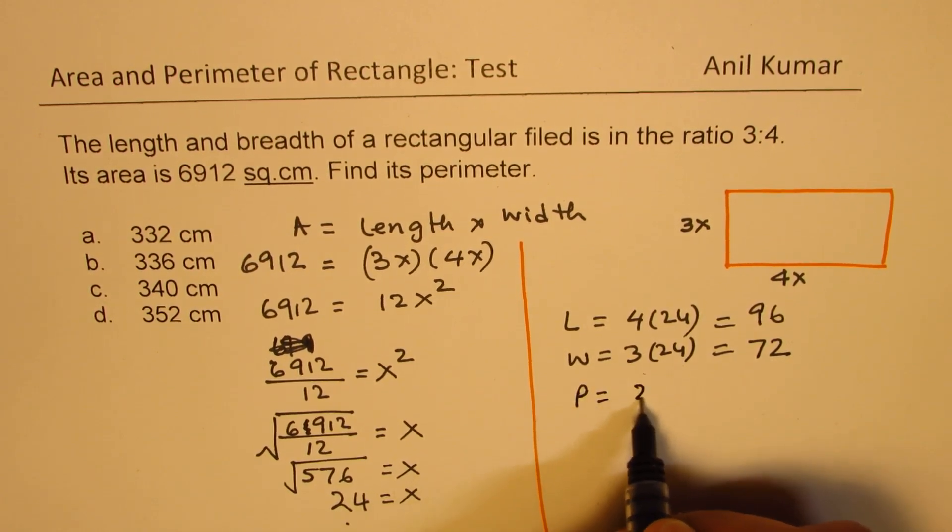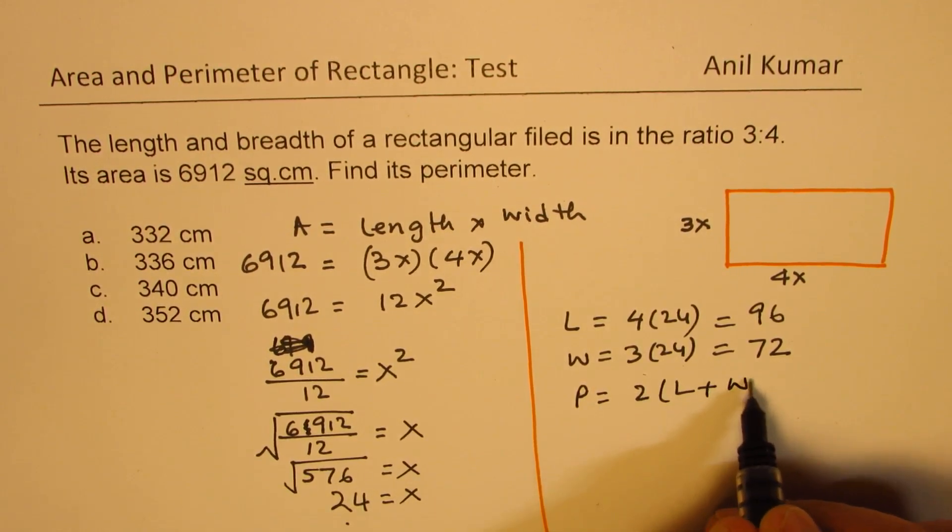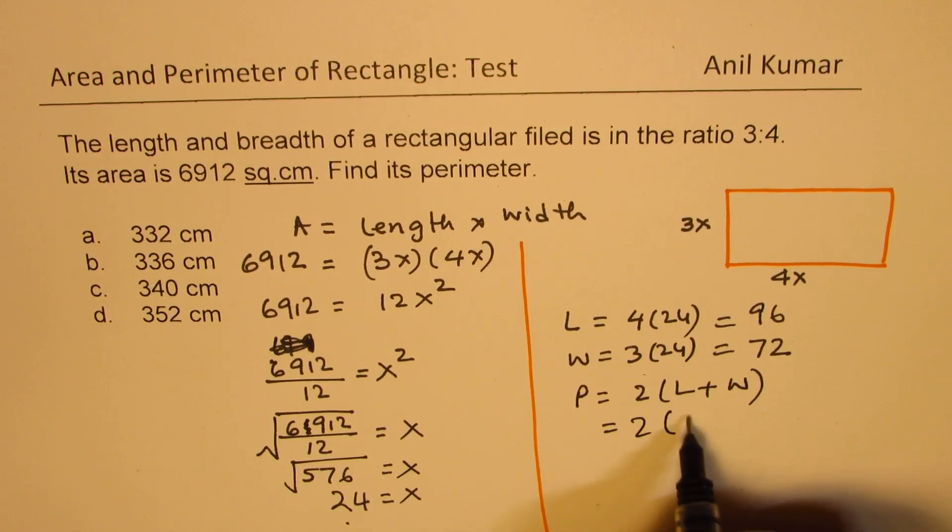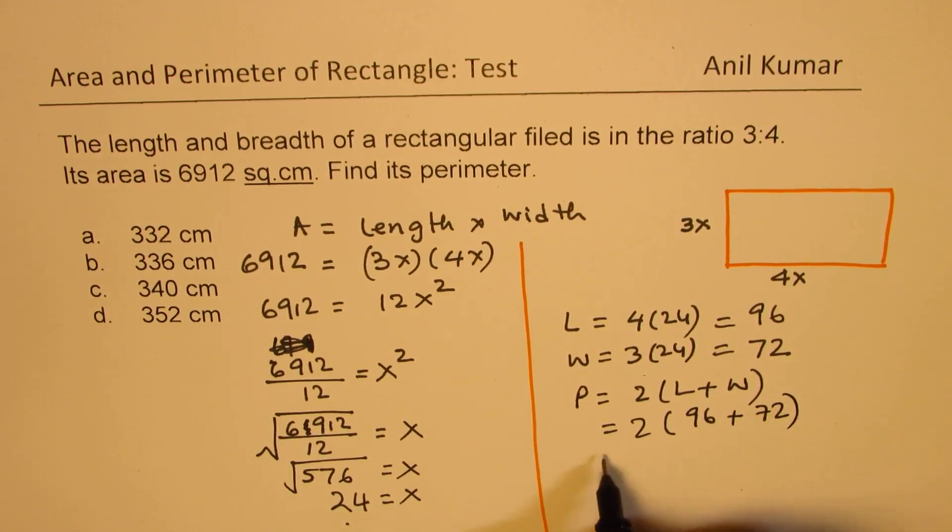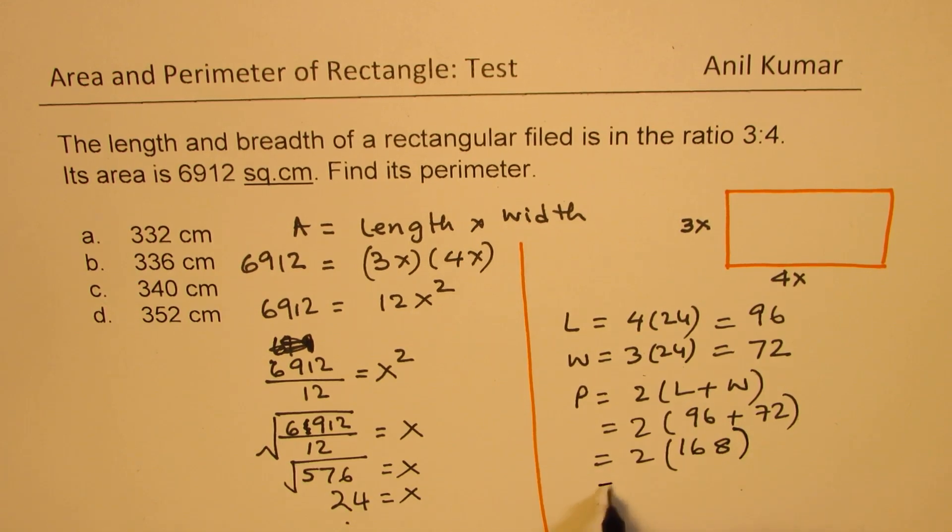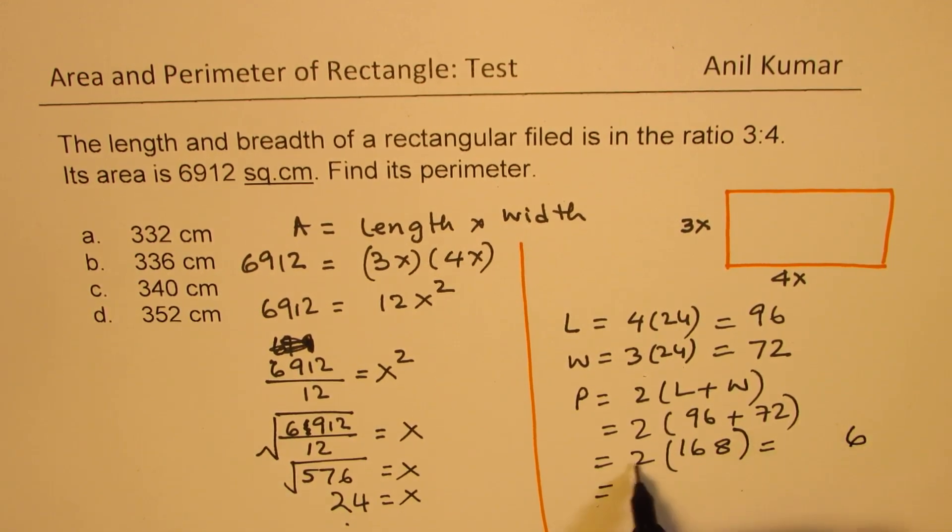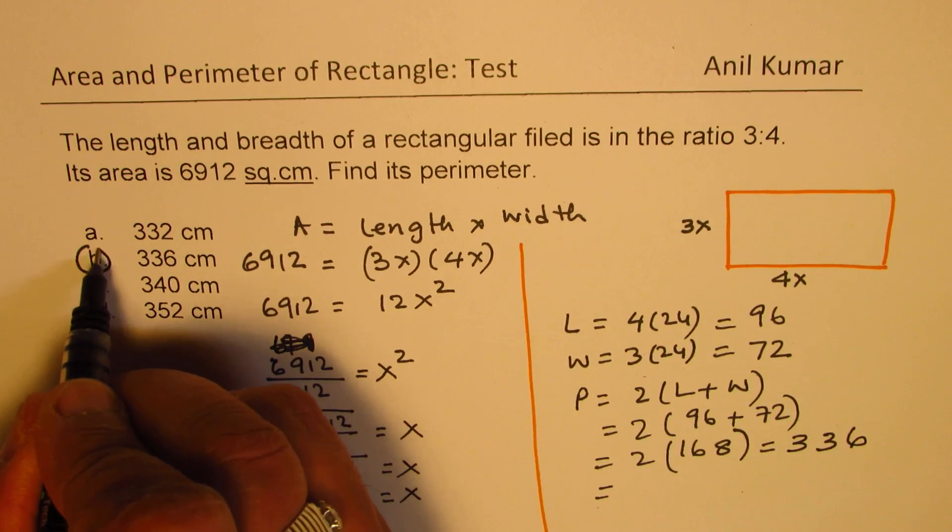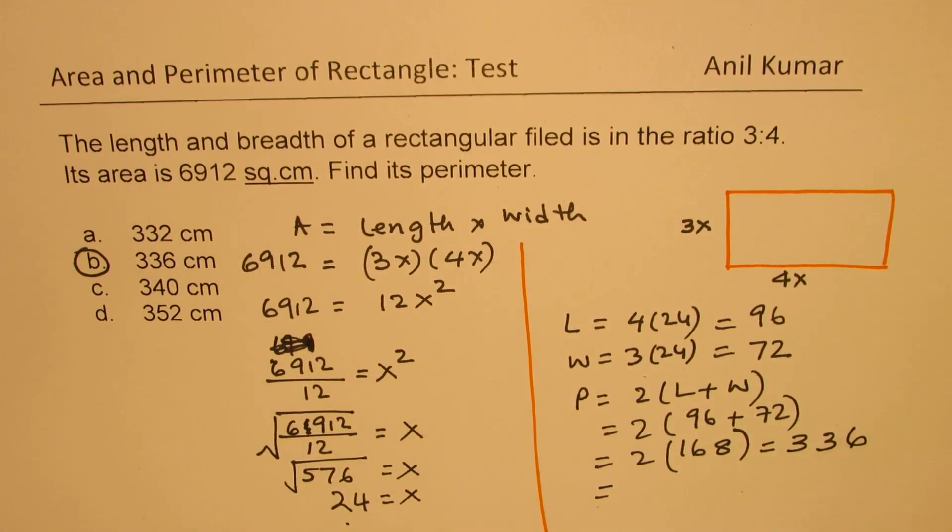Perimeter will be 2 times length plus width, which is 2 times 96 plus 72. So that should be equal to 168. And when you multiply, you get the answer 336. So B is the right option for perimeter.